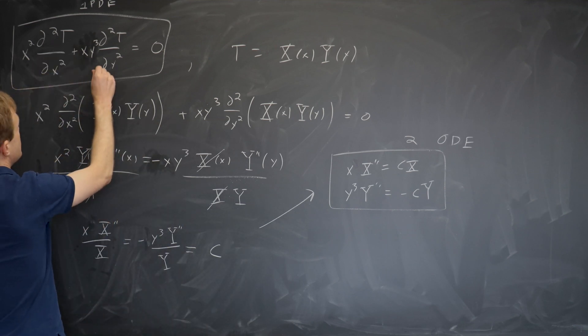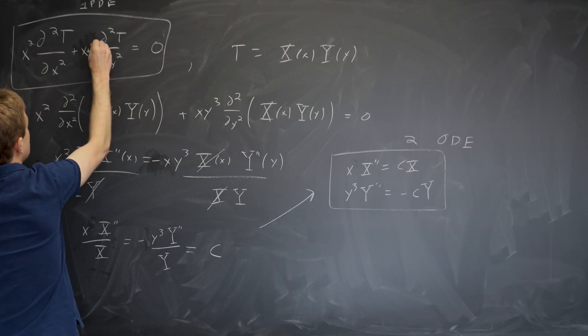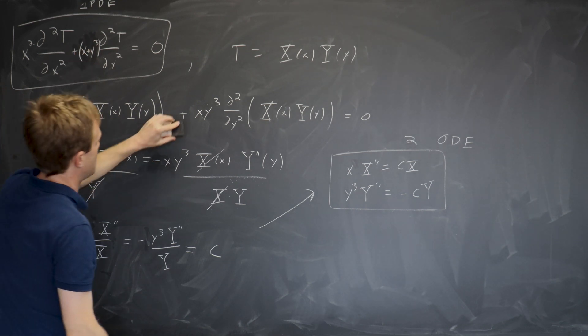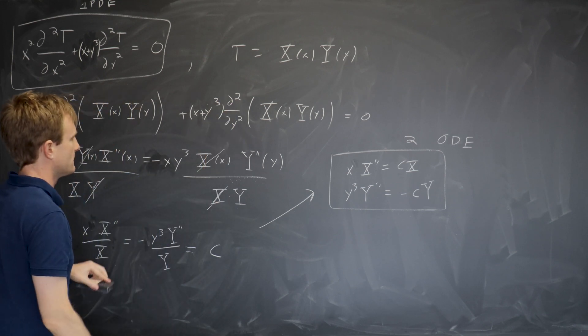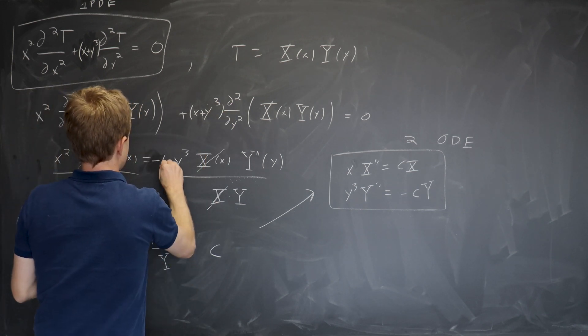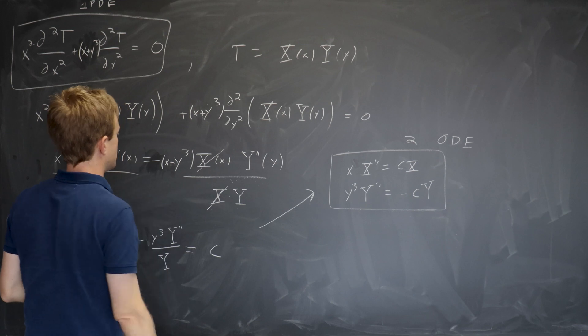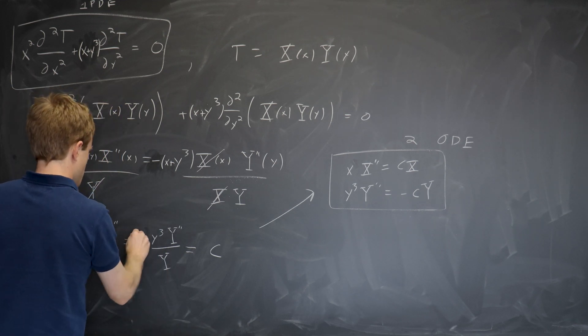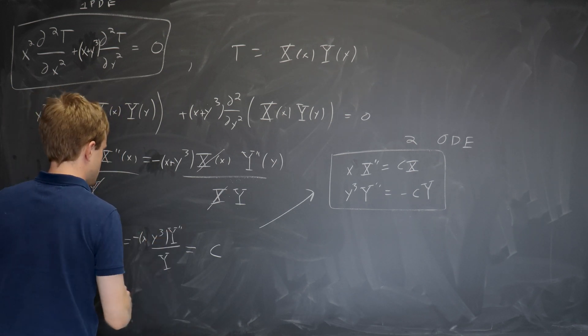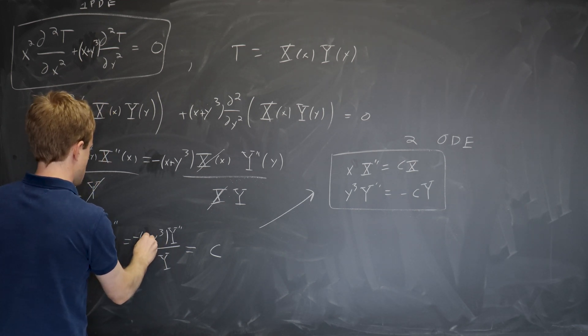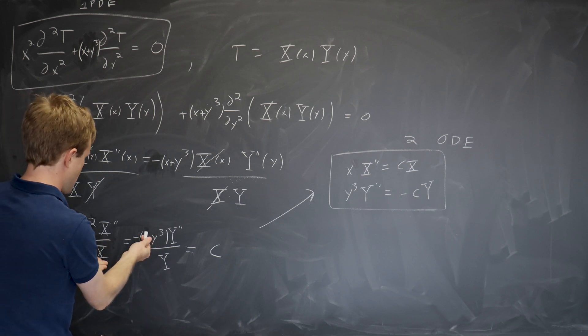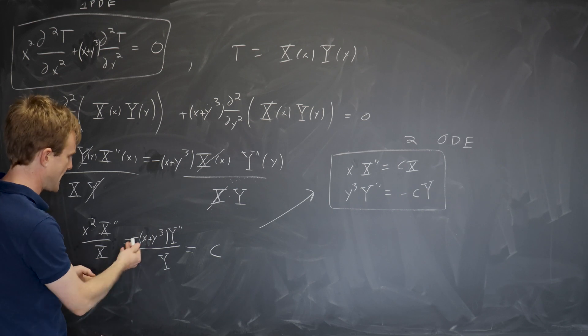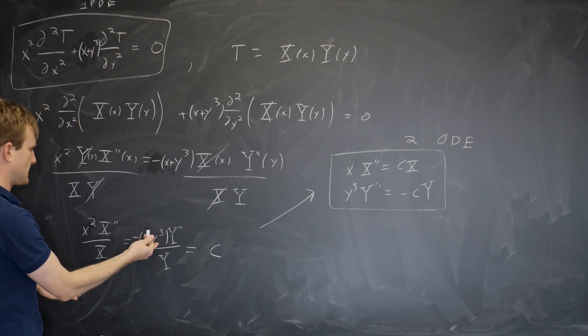If I instead change this to x plus y cube over here, now we're going to have a problem because I'm going to have x plus y cube multiplying all of that, minus x plus y cube multiplying all of that, minus x plus y cube multiplying all of that. And now you can see there's really nothing I can do. The left-hand side nicely depends on x. The right-hand side depends on x and y.